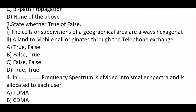State whether true or false. First statement: the cell or subdivisions of a geographical area are always hexagonal. Second statement: a land-to-mobile call coordinates through the telephone exchange. Option A: true, false. Option B: false, true. Option C: false, false. Option D: true, true. The right answer is Option B, false and true respectively. The first statement is false because cells are not always hexagonal, and the second statement is true.